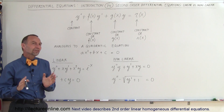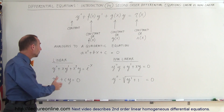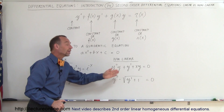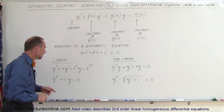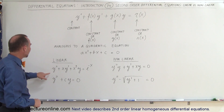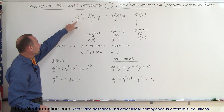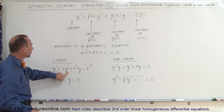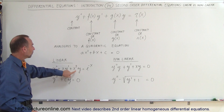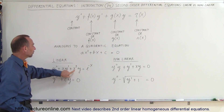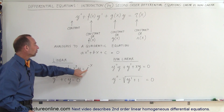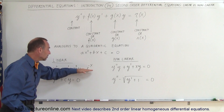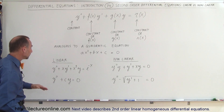To give you a feel of the difference between linear and nonlinear, we have a few linear examples and a few nonlinear examples. In the linear example, notice we have a y double prime with a constant one in front of it, a y prime with a function of x in front of it, a y with a function of x in front of it, equals some function of x. This is known as a linear second order differential equation.